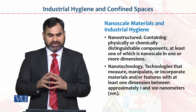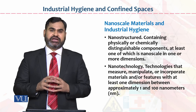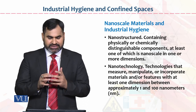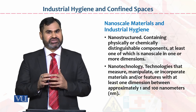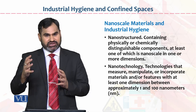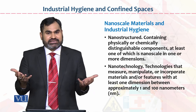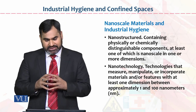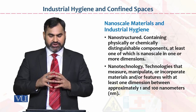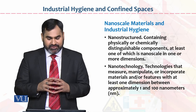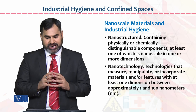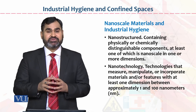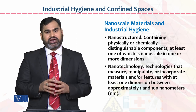Nanoscale material and industrial hygiene ko further discuss kiya jaye to ismein nano-structured bhi aata hai. Nano-structure kya hai? It contains physically or chemically distinguishable components, at least one of which is nanoscale in one or more dimensions. Isko hum nano-structured bolte hain. Nanotechnology: nanotechnology may manipulate or incorporate material or features with at least one dimension between approximately one and one hundred nanometers. Agar koi cheez 1 ya 100 nanometers mein hai, to woh nanotechnology ki maddad se operate ho sakti hai.